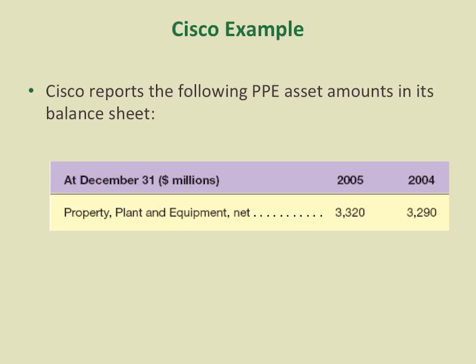Here's an example from Cisco. In Cisco's 2005 balance sheet, the disclosed information related with property, plant, and equipment shows only what we call the net book value. For example, in 2005, the net book value is $3,320 million — just one line item on the face of the balance sheet. So we could ask lots of questions about this number.